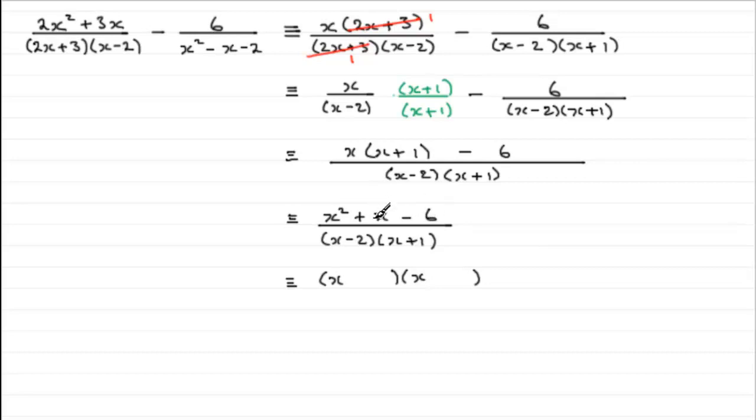So it's going to be x plus 3 and x minus 2 on the top, and that's all divided by x minus 2 and x plus 1.